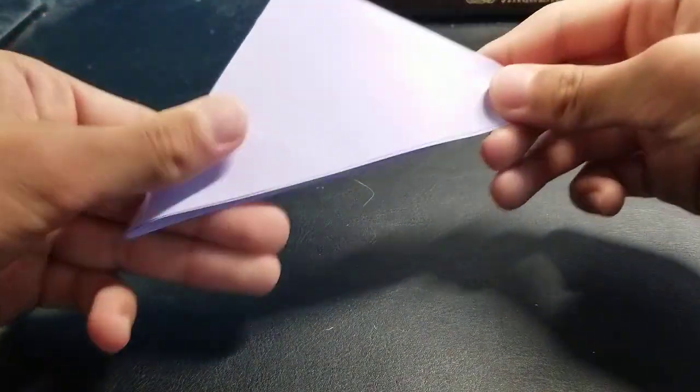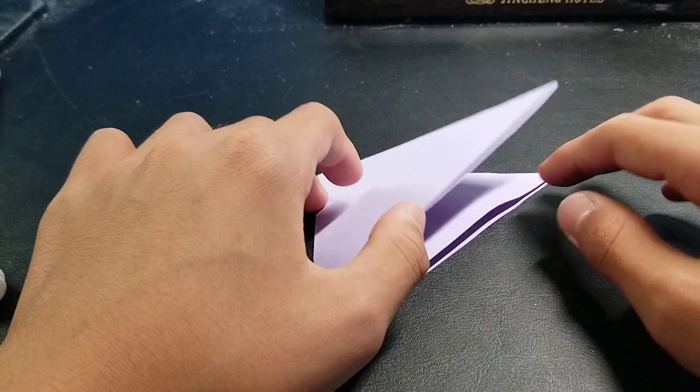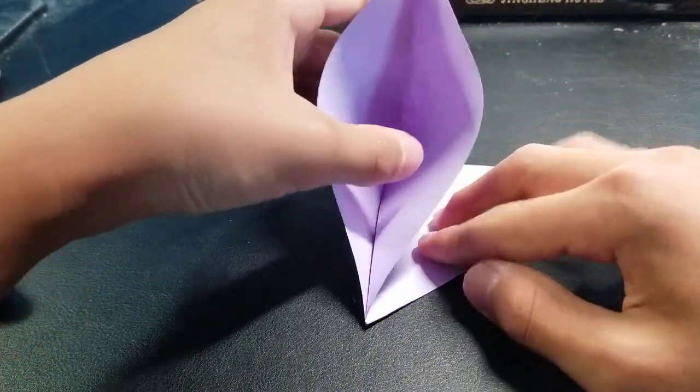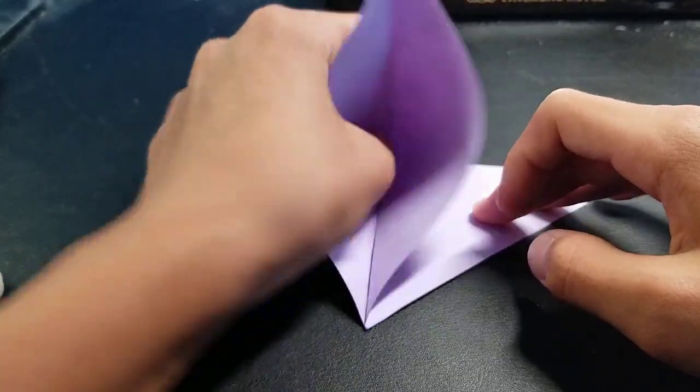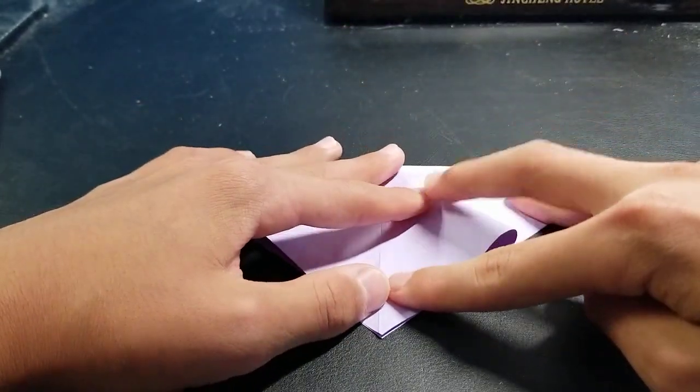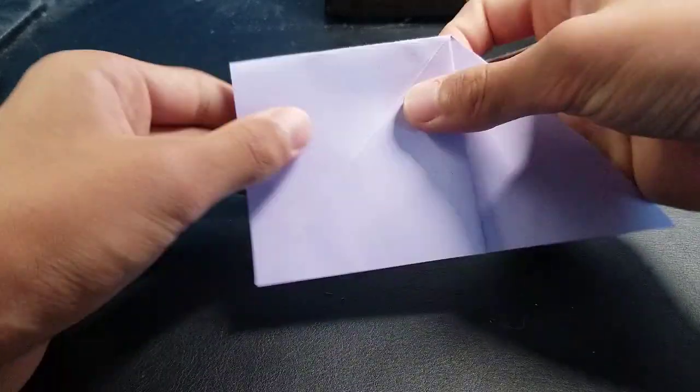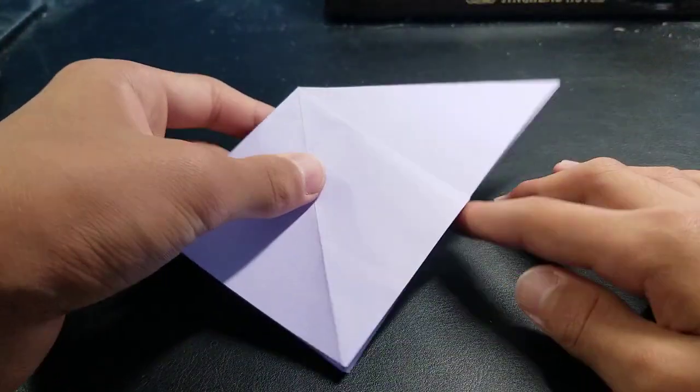Now you want to unfold this flap and then open it up and just press down like that to make the square. And then turn it.